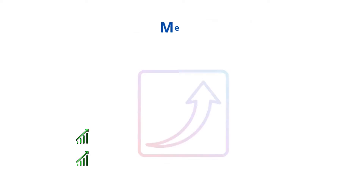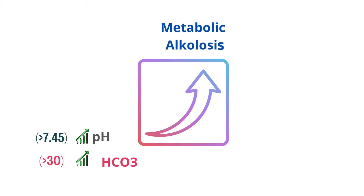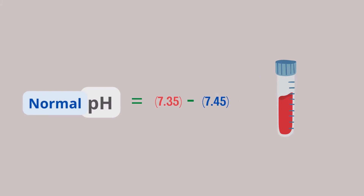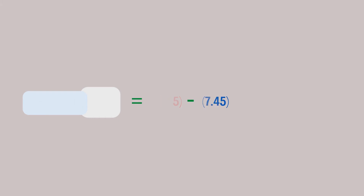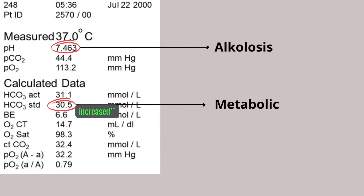The higher level of bicarbonate in the blood causes metabolic alkalosis, a condition in which the pH of blood rises above normal, that is above 7.45. Normally, pH of blood is between 7.35 to 7.45. Look at this example — here the pH of blood is more than 7.45, meaning the patient is in alkalosis, and the HCO3 levels are decreased, indicating metabolic alkalosis.